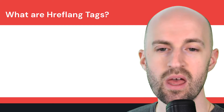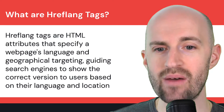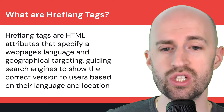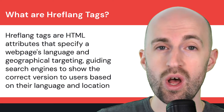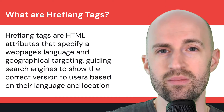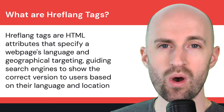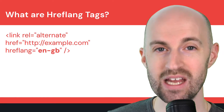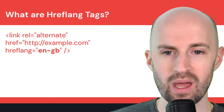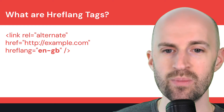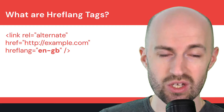So what are hreflang tags? Hreflang tags are HTML attributes that specify a web page's language and/or geographical targeting, and that guides search engines to show the correct version of a piece of content to a specific user based on their language and/or location. Here's an example of an hreflang tag — the bolded piece is the hreflang language region identifier. In this case it's EN-GB, which translates to English, UK.